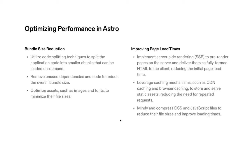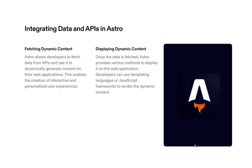Similarly, Astro leverages caching mechanisms such as CDN caching and browser caching to store and serve static assets, reducing the need for repeated server requests. It also minifies and compresses CSS and JavaScript files to reduce file size and improve loading times — pretty amazing stuff.